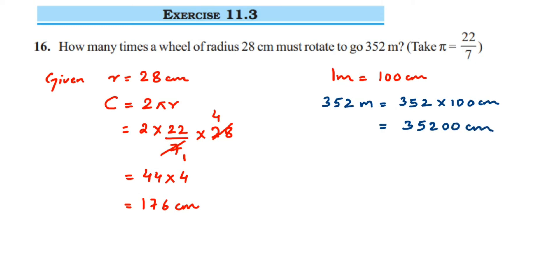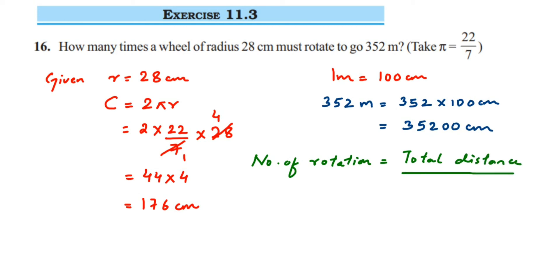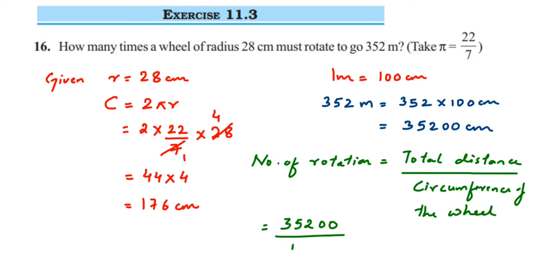Now we find the number of rotations. Number of rotations equals total distance divided by the circumference of the wheel. Substituting the values: 35200 centimeters divided by 176.